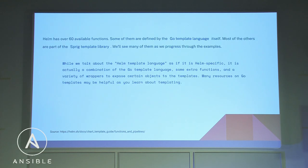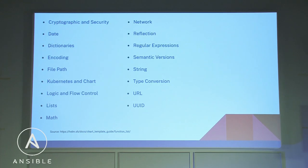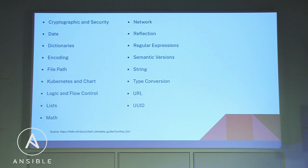But it's limited to what the Helm authors allowed — they started with the Go templating library and added the Sprig template library, giving you around 60 possible functions, and that's where it ends. This is not extensible without contributing to the project and having your changes accepted. For me that's quite limited. On top of that, this is glorified YAML generation — the fact that I even have to manage indenting myself is awful.